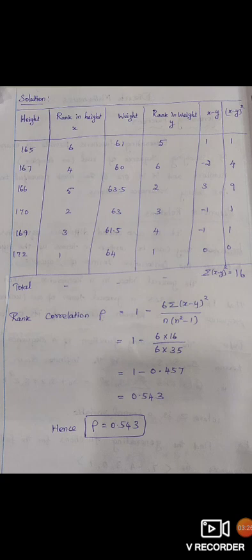So 1² = 1. (-2)² = 4. 3² = 9. (-1)² = 1.